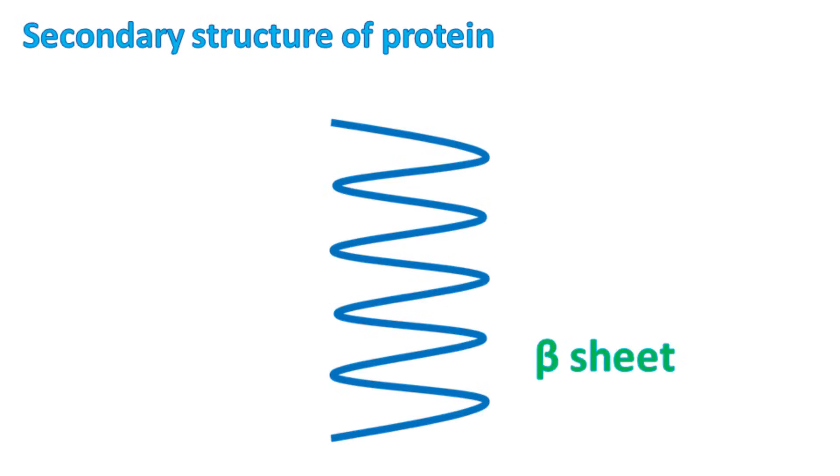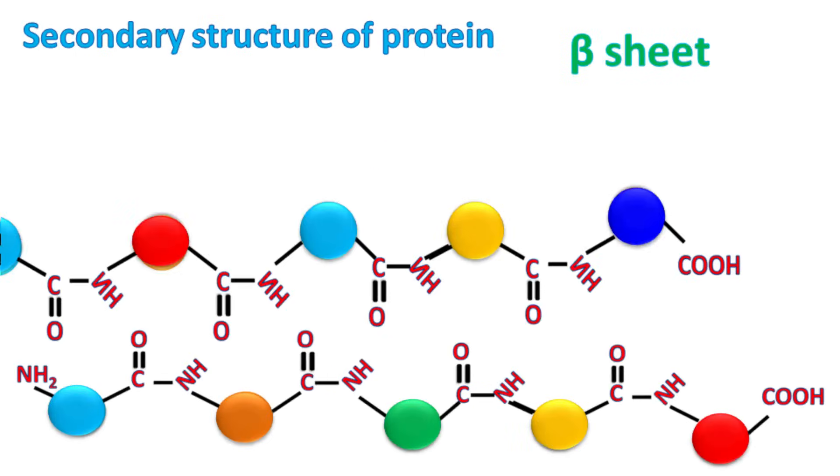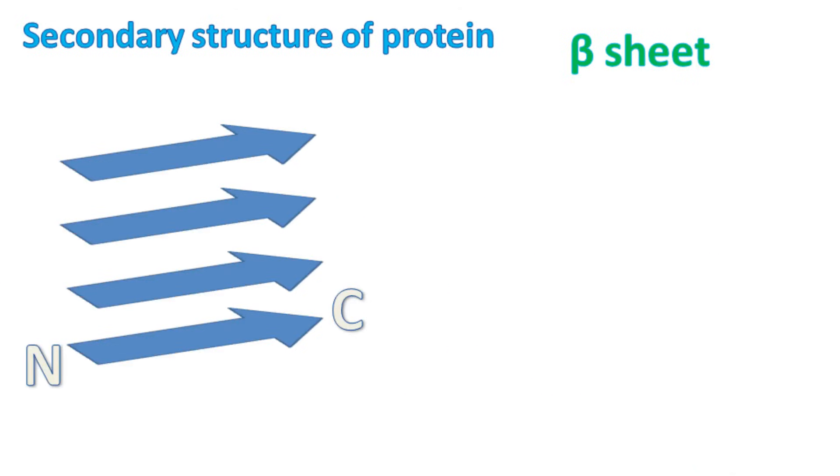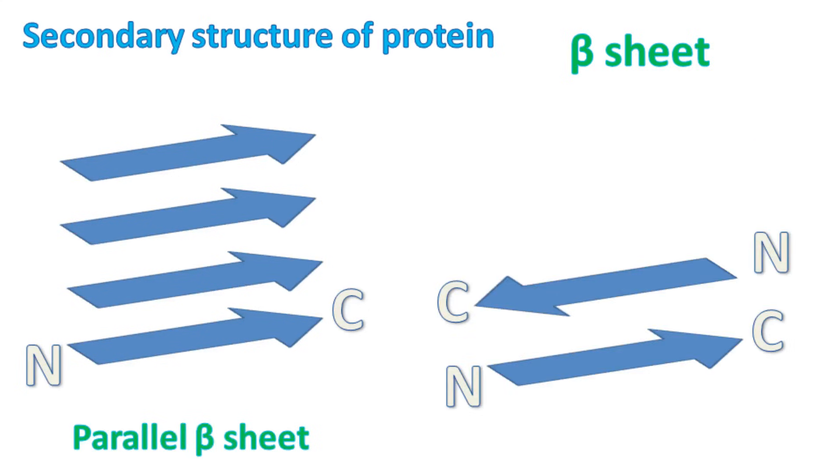The beta sheet. Beta sheet is the second type of secondary structure of protein. In alpha helix, the hydrogen bonding was between the same peptide chain, while in beta sheet, the hydrogen bond is formed between two different polypeptides or the same polypeptide chain. The beta sheet can be either arranged in a parallel or anti-parallel fashion.